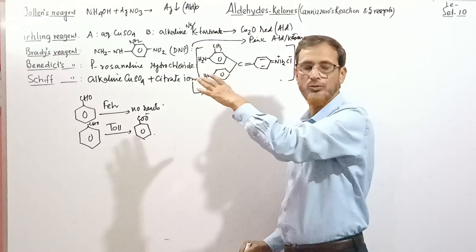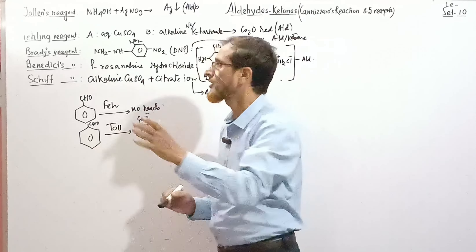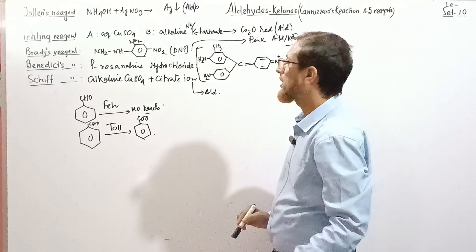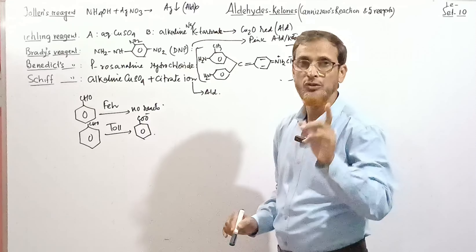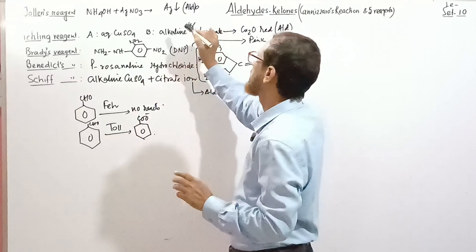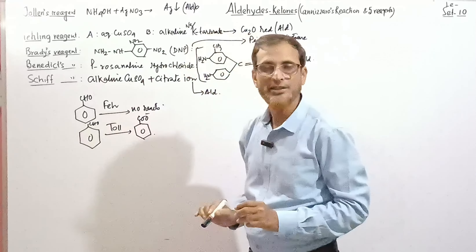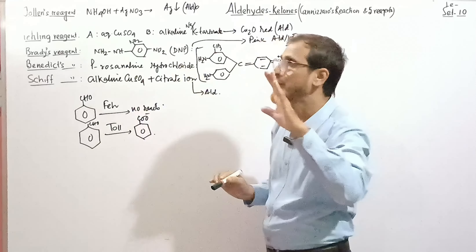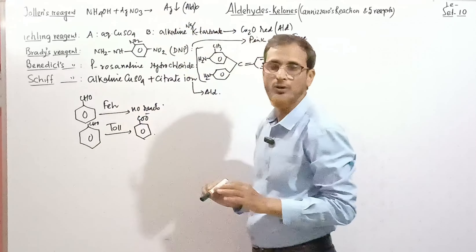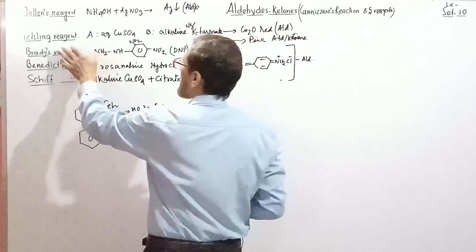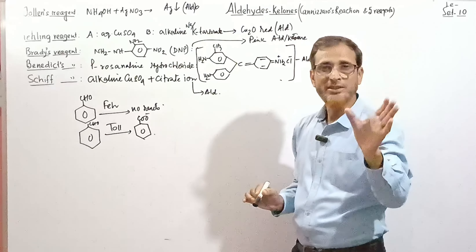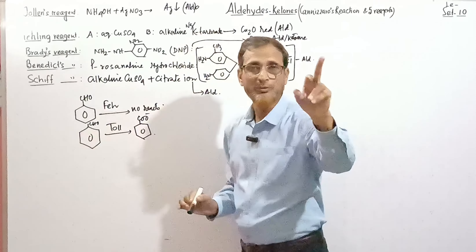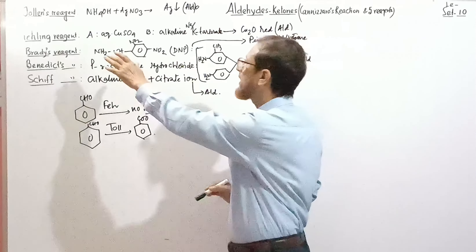The five important reagents are: First, Tollens reagent — ammoniacal silver nitrate solution (AgNO₃ + NH₄OH). It gives the silver mirror test. It reacts with aldehydes but not ketones. It is a mild oxidizing agent that oxidizes the CHO group of aldehyde to COO⁻, while silver ions are reduced to silver metal, giving a silver mirror/silver color in solution.